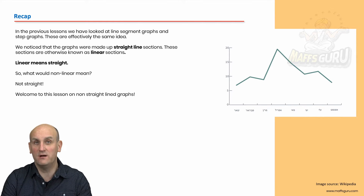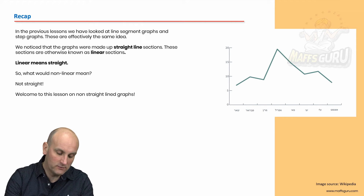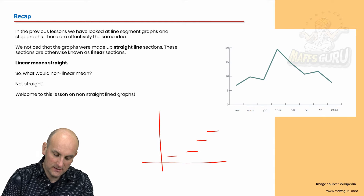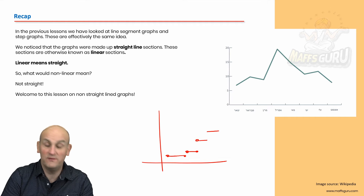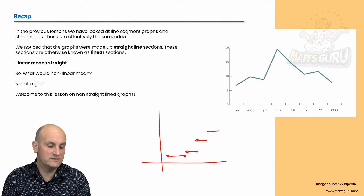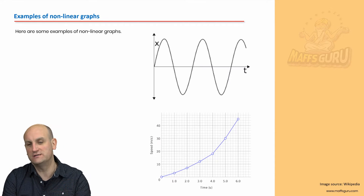If you remember, this was a line segment graph where we have basically a number of sections of the graph made up of line segments. The lesson after that was a step line graph — a section of a graph basically joined together by lines with open and closed points. Now, obviously linear in this situation means straight, so we're looking for examples of non-linear, meaning not straight.